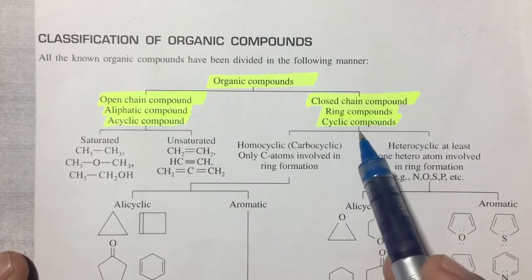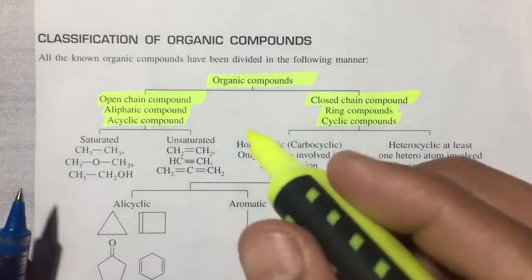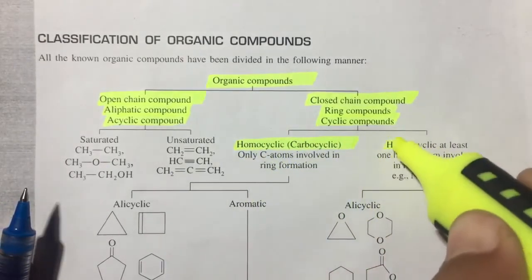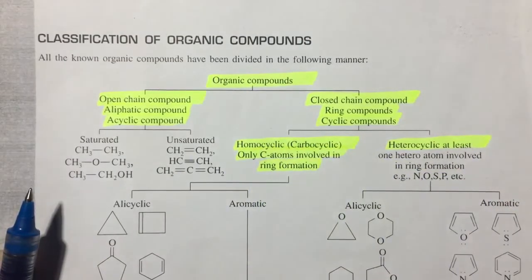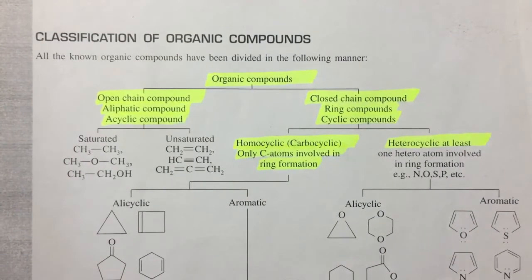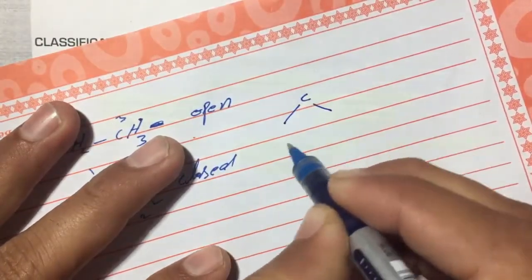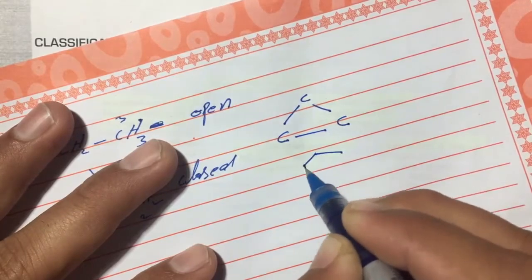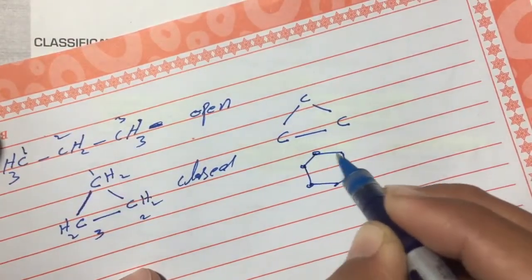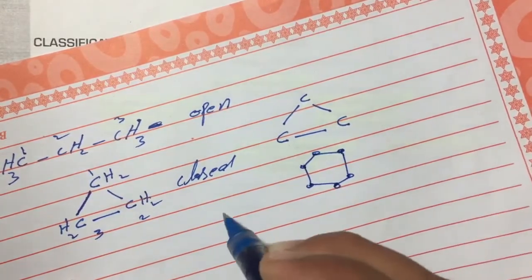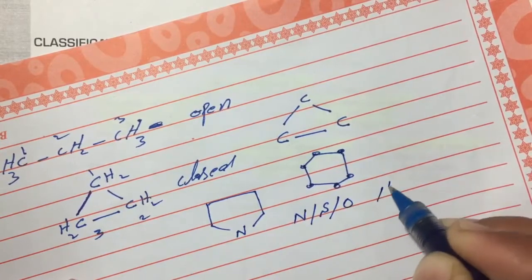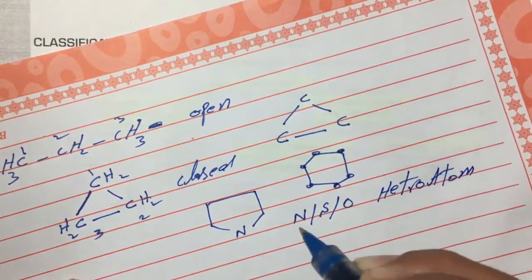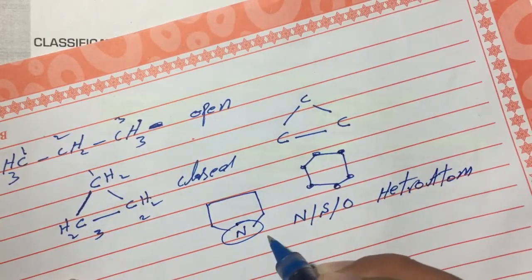Cyclic compounds are of two types. In one type, only carbon atoms are present in the ring. In the other type, besides carbon, other atoms such as nitrogen, sulfur, or oxygen are also present in the ring — these are called heteroatoms. When a ring contains a heteroatom, the compound is called a heterocyclic compound.